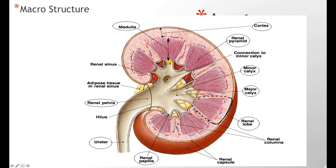The filtered fluid gets collected in the renal papilla, from where it enters the minor calyx. Multiple minor calyxes form a major calyx, and from there it exits out the hilum as the renal pelvis, enters the ureter, and from there goes to the urinary bladder. One thing to keep in mind: the whole structure of one pyramid with its surrounding cortex and calyxes constitutes a renal lobe.